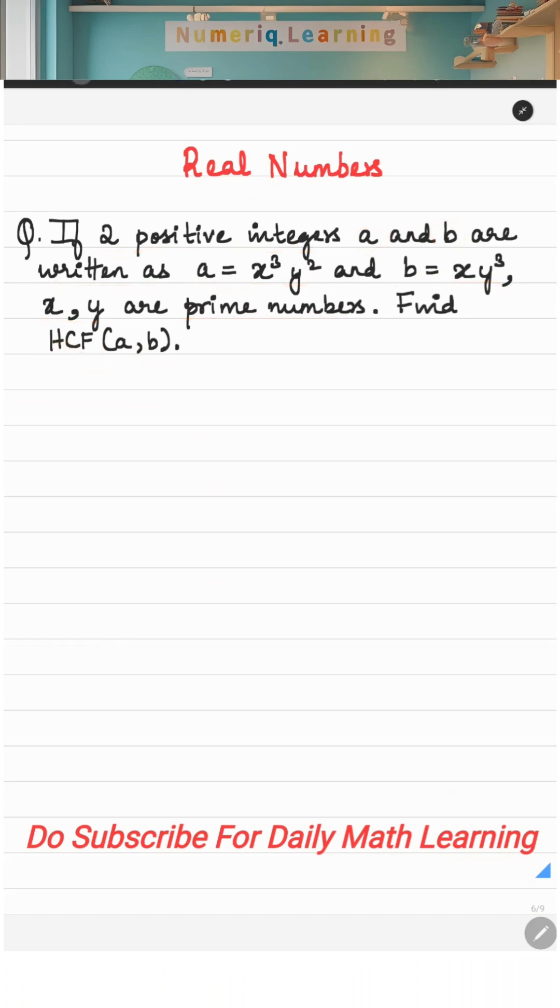That is the highest common factor of a and b. So what is given is you are given two positive integers a and b, and you are given the prime factorization of it, which is x cube into y square is a, and b is x into y cube. So you are given the prime factorization.